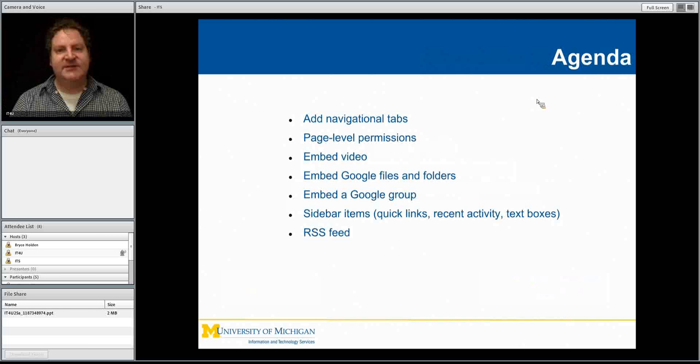For navigational tabs — on the M Plus Google site you can see at the top, we have links that are tabs jumping out to all of our collaboration services. I'll show you how to add navigational tabs to highlight different pages on your site. We already have our site built from part one. If you go up to the More menu and go down to Edit Site Layout, you can see where we have our header and our sidebar, and the horizontal navigation is where you can get your tabs enabled.